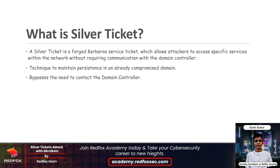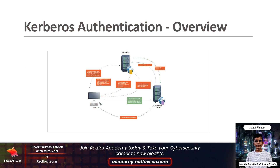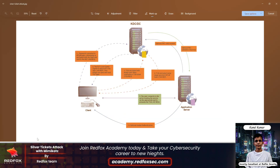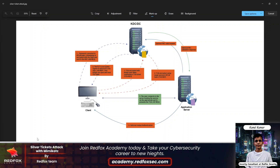To craft our Silver Ticket attack, first we need to understand how Kerberos authentication works. Here is a diagram — I will let you go through it. Imagine you have to access any service on the domain. To access any service on the domain you cannot just go and start using the specific service. There is an authentication mechanism called Kerberos authentication in Active Directory to access any resources. Let's understand how Kerberos authentication works using this diagram.